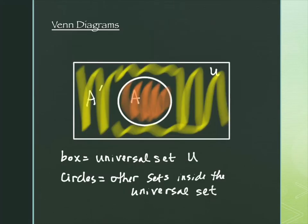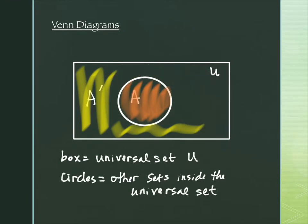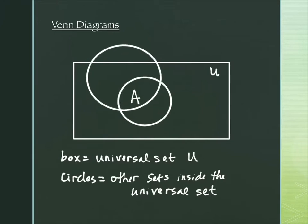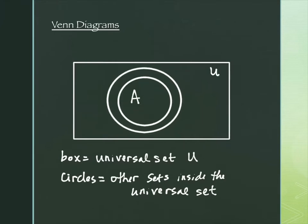In the picture, set A contained inside of set B means I draw circle B surrounding circle A. Everything inside A is inside B — because the whole circle A is inside B. This is the Venn diagram expression for the subset concept.